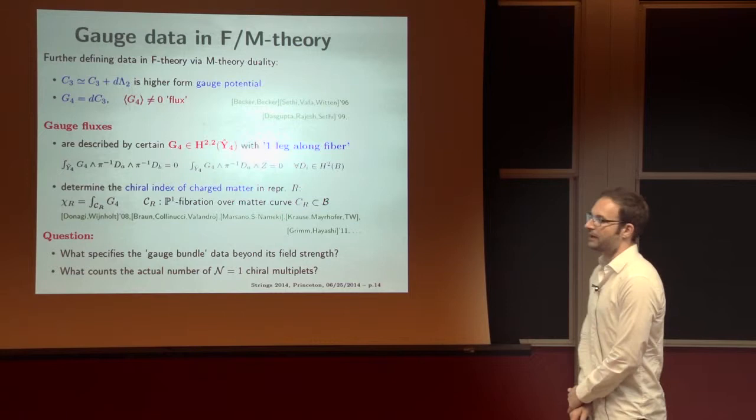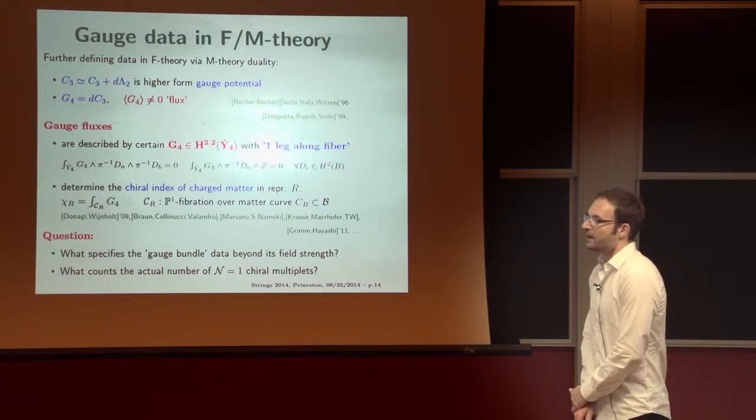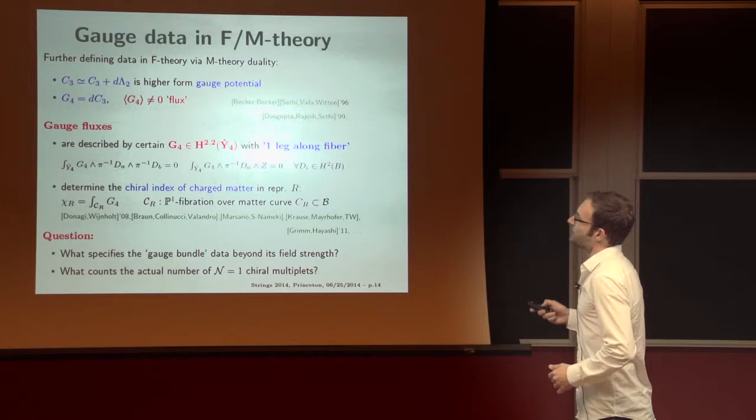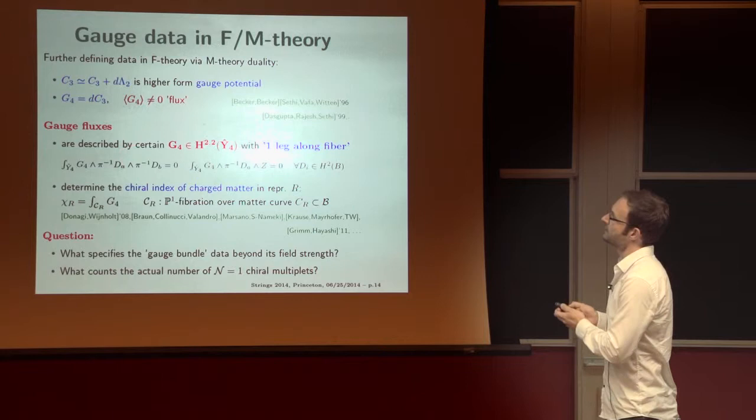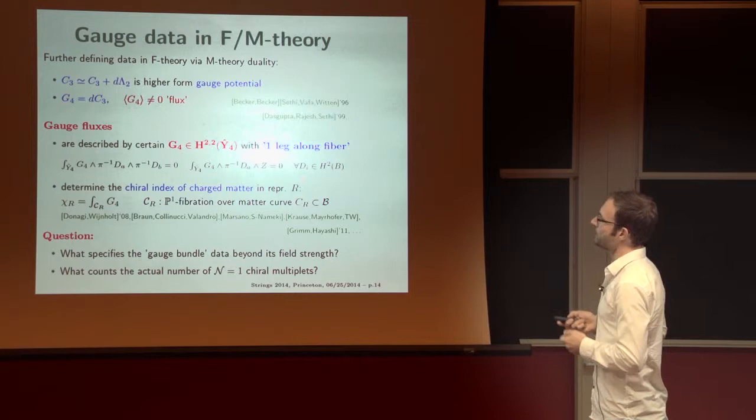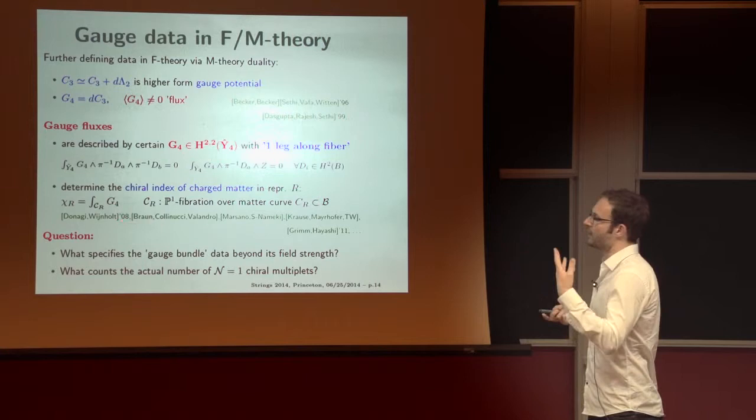So, last topic, I'd like to discuss now ideas about the gauge data in M-theory. So, not everything is geometry in F-theory. We also need input from M-theory duality in particular. There is this M-theory three-form, which is a gauge potential. Its field strength would give rise to G_4 form flux, which, of course, has been studied for a long time. Gauge fluxes, in particular, are a special type of such fluxes.